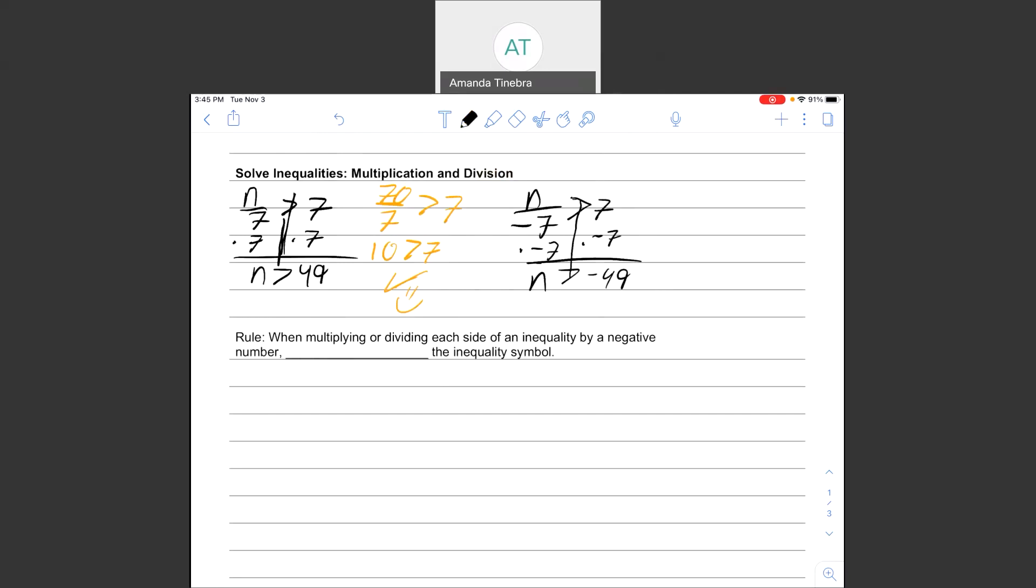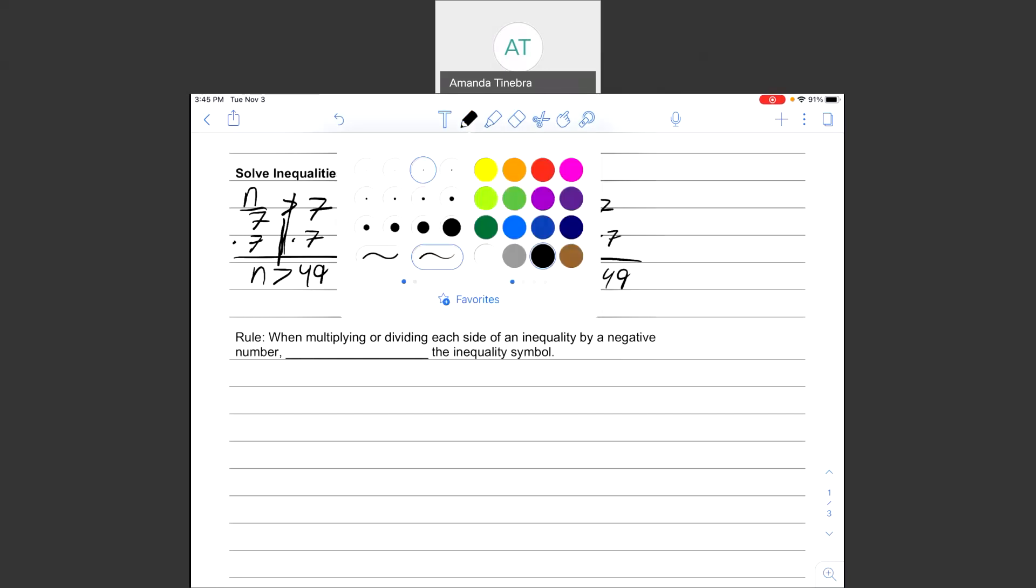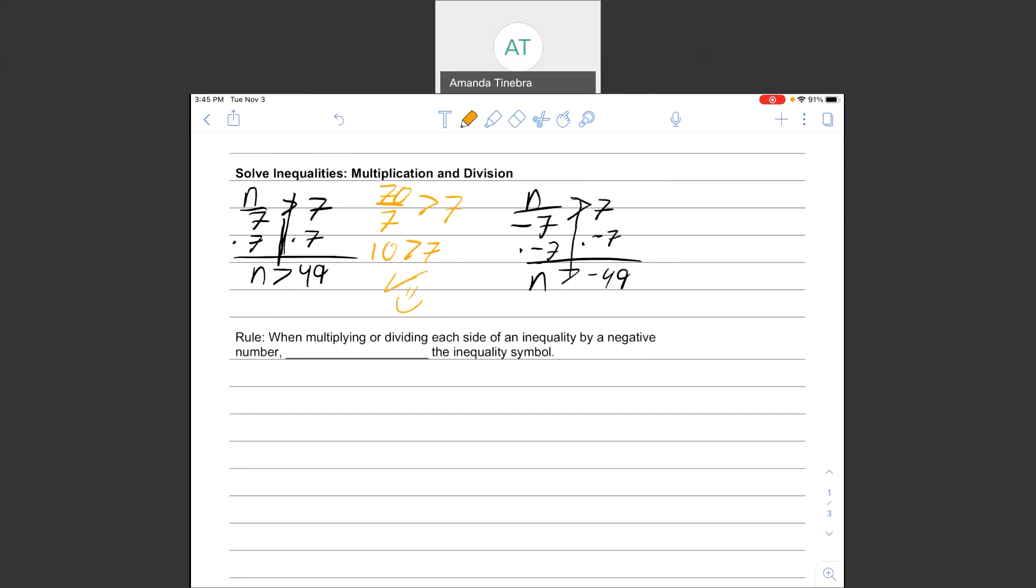Okay, so this time, I want to make sure that if I pick a number bigger than negative 49, that that number divided by negative 7 will be bigger than 7.